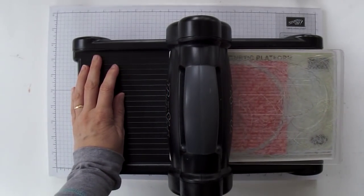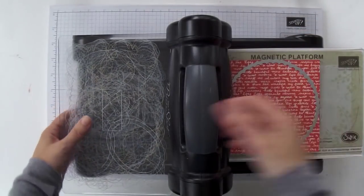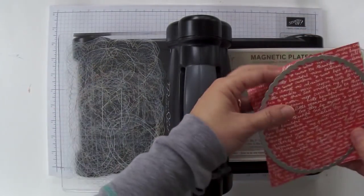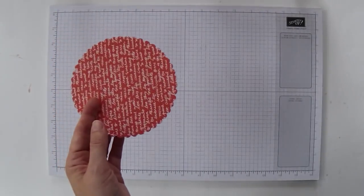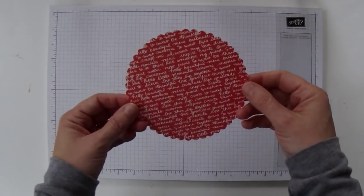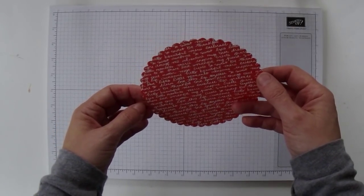You'll want to use paper that is double sided because you'll see the pattern from both sides. You can set your Big Shot aside and then you'll want to fold your circle in half.